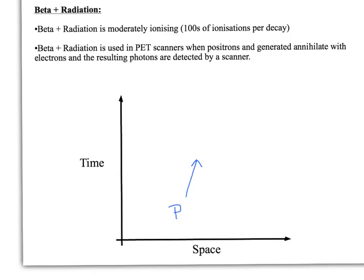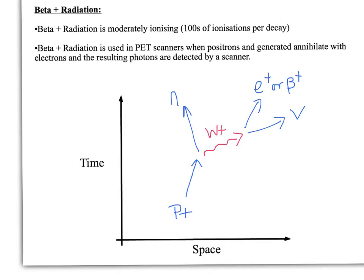Let's have a look at beta plus radiation. What happens is that a proton decays into a neutron because an up quark gets converted into a down quark through weak interaction. To conserve the charge, a W plus boson is formed because the proton is positively charged, which then splits into our positron — our beta plus particle — and a neutrino. That's beta plus radiation, and it's used in PET scanners, where the P stands for positron. A part of the scanner manufactures positrons by pair production, and when these positrons annihilate with an electron, they release photons of radiation which can be picked up by a scanner.